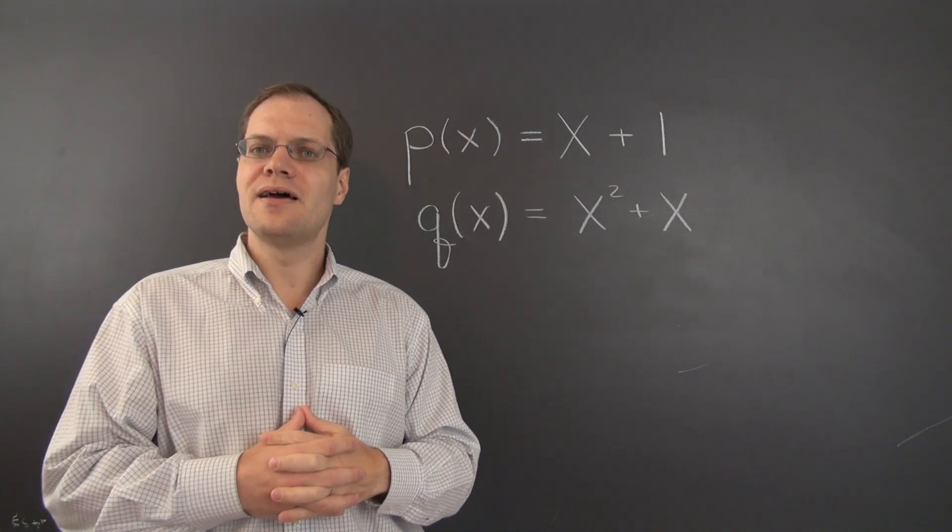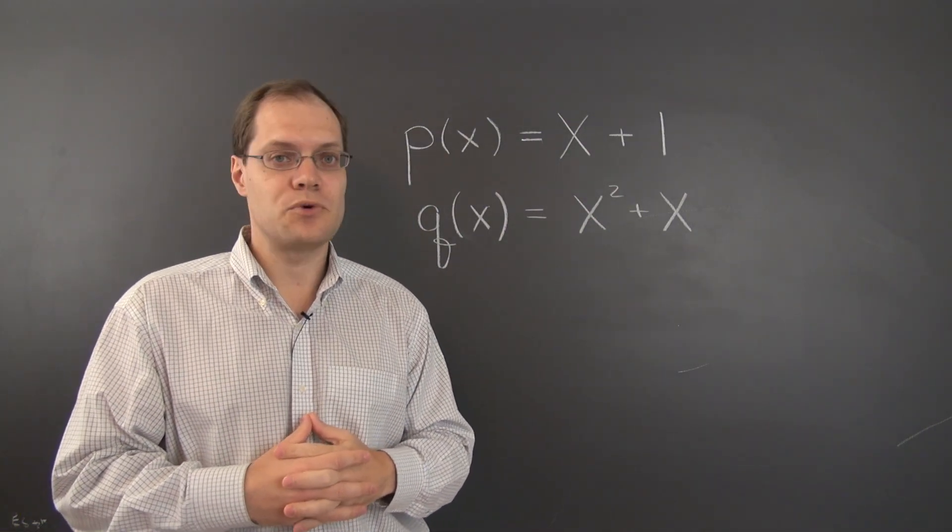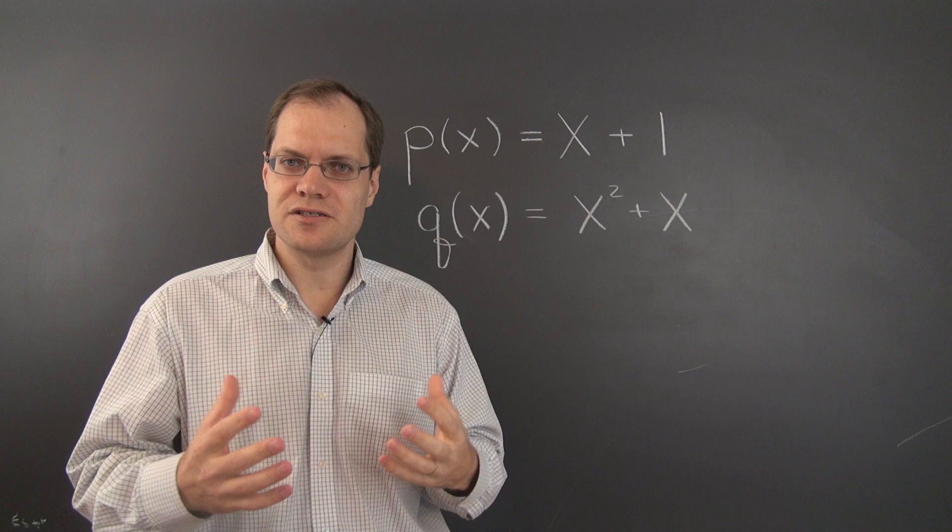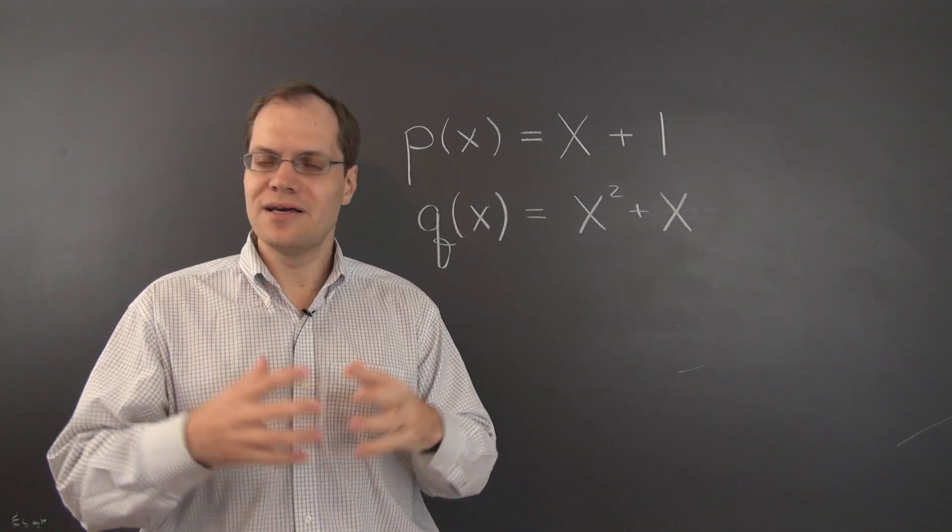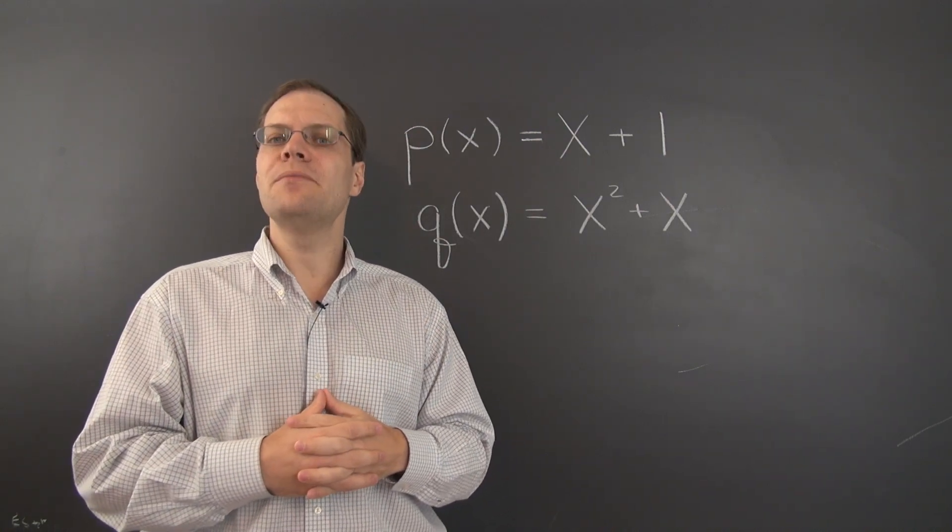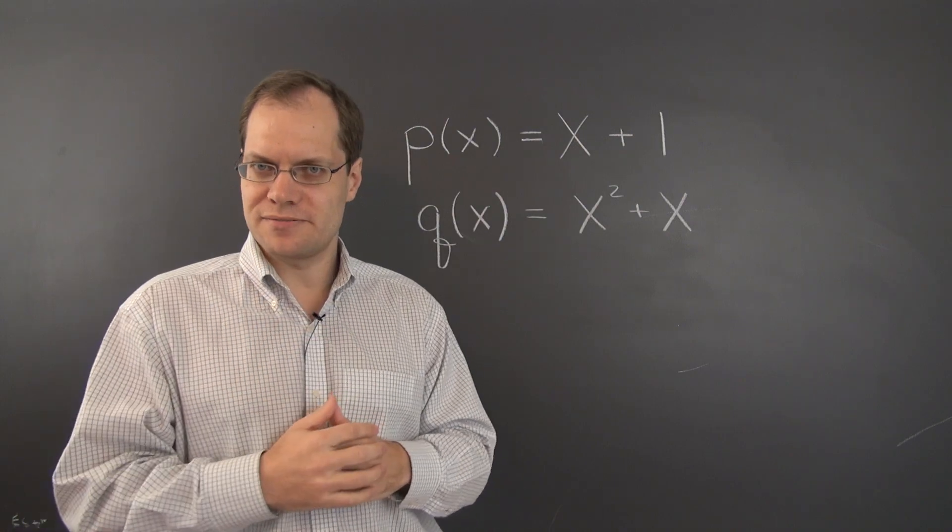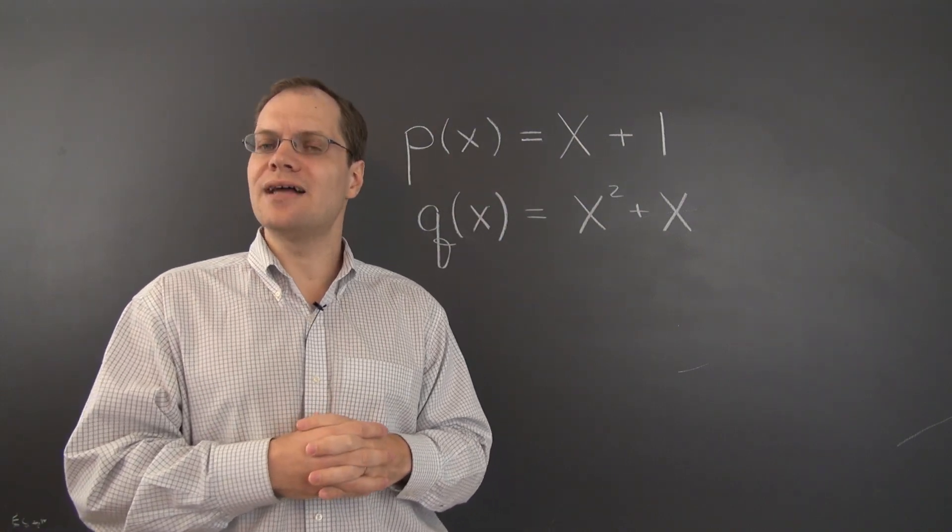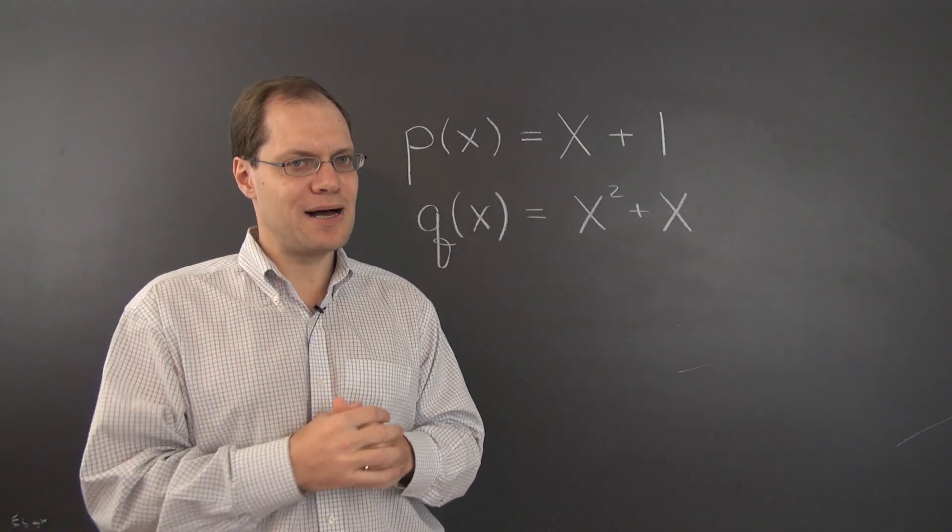we're now talking about polynomials as vectors. And when you're talking about objects as vectors, all you're allowed to do with them is add them together and multiply them by numbers. And x is not a number. It's another polynomial.